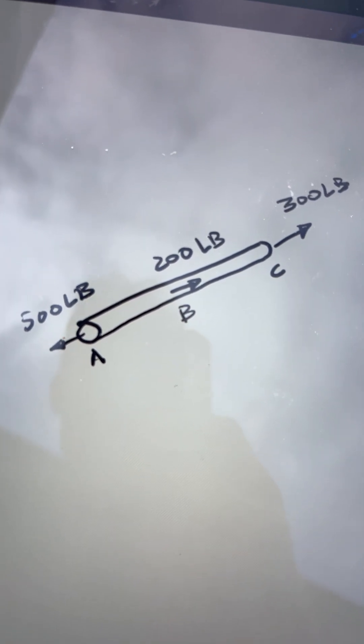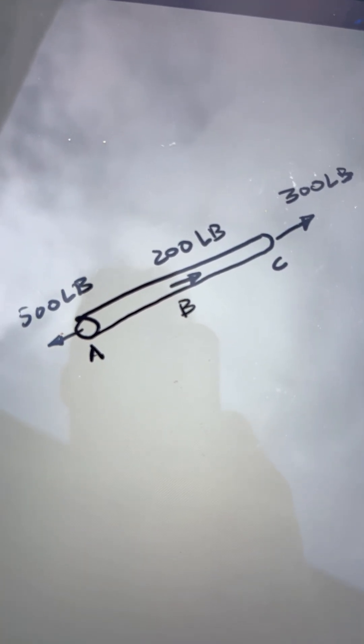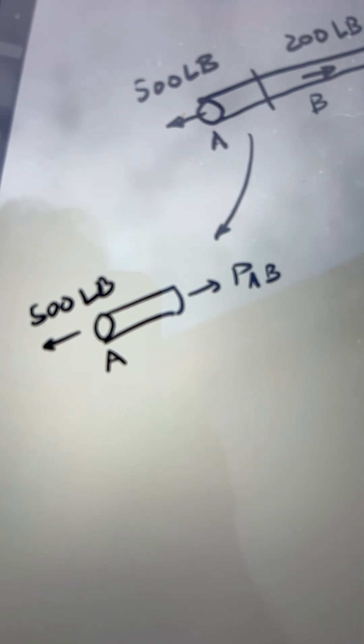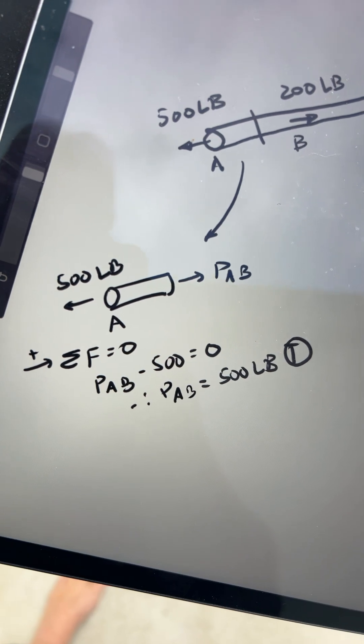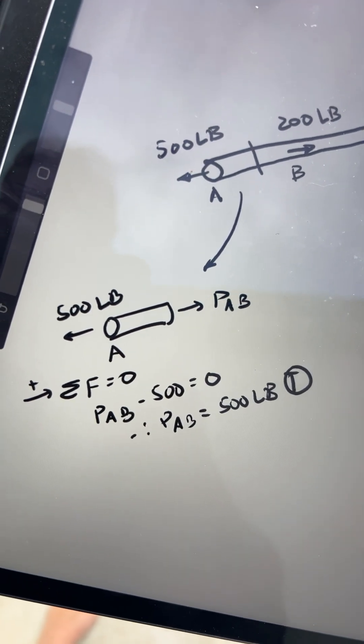However, if you don't see this immediately, all you need to do is make a section cut. Let's take one between A and B, like this. Sum forces along the rod, and we find that PAB is 500 pounds tension.